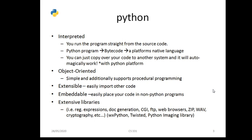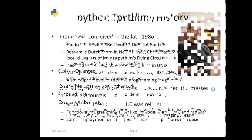Extensive libraries are available in Python. These libraries include support for: regular expressions, doc generation, CGI, web browsers, zip, web, cryptography, photography, Twisted Python, and image libraries.